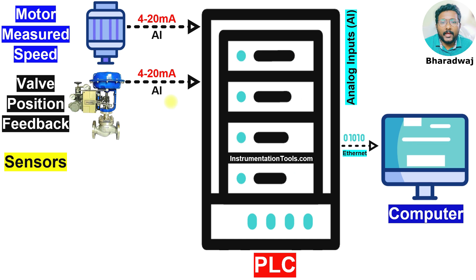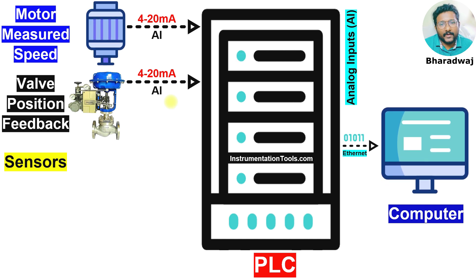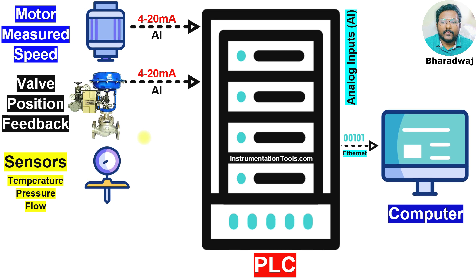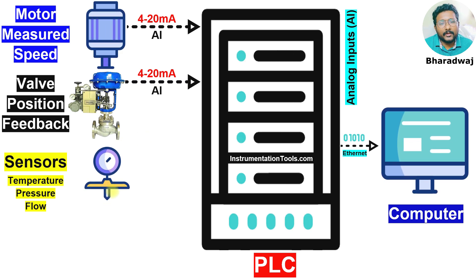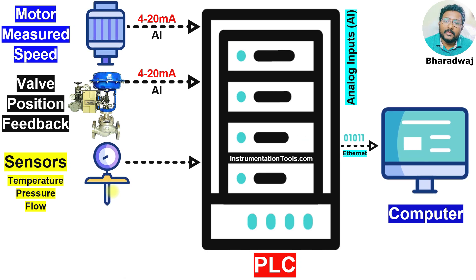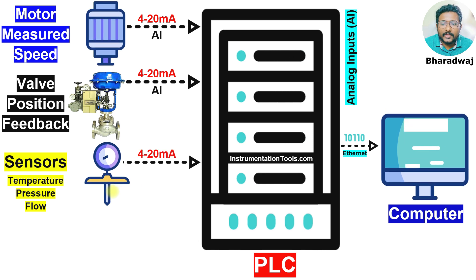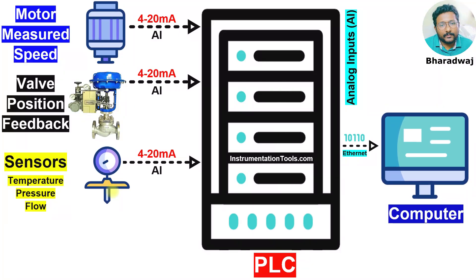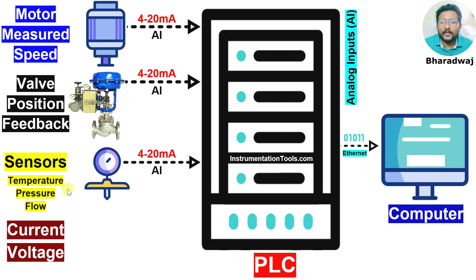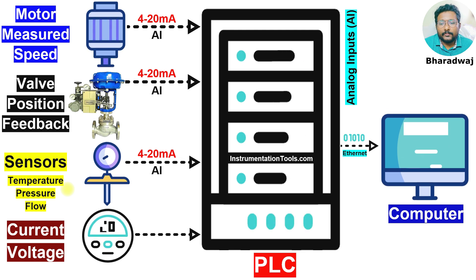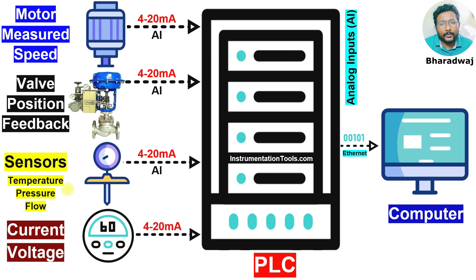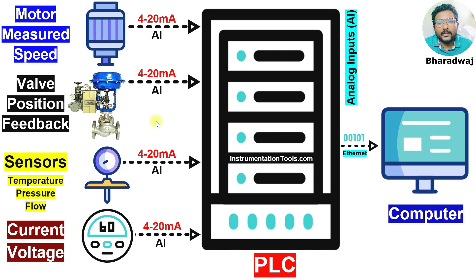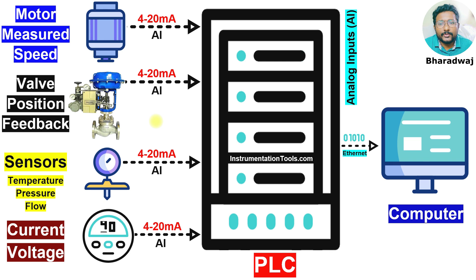We also have many types of sensors available, like temperature, pressure, flow, etc. These are all analog inputs to the PLC and they also use 4 to 20 mA signals. Current and voltage signals are also 4 to 20 mA analog signals — AI. I have shown some of the analog inputs which are commonly used in industries.